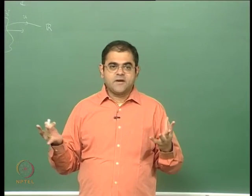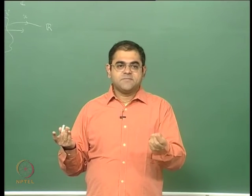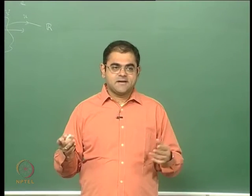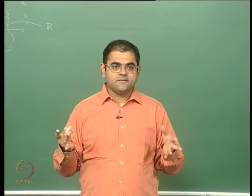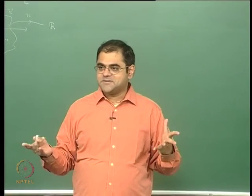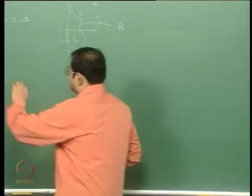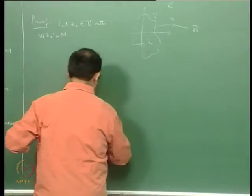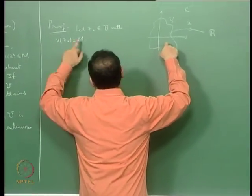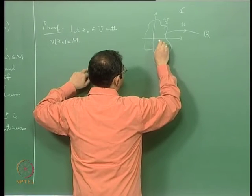So if you have a function which is just continuous and has the mean value property, the upshot is that it is harmonic and therefore infinitely differentiable. At the point z0, u will have the mean value property.